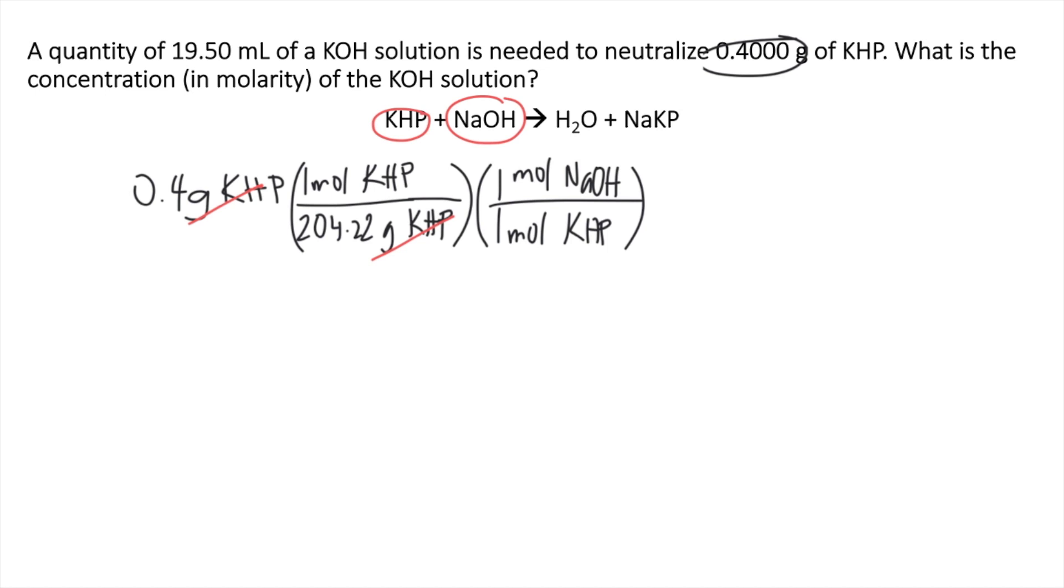The moles of KHP cancel out, and now you have the moles of NaOH. If you solve this in your calculator, 0.4 times 1 divided by 204.22 times 1 divided by 1, you will get approximately 1.959 times 10 to the negative 3 moles of NaOH.